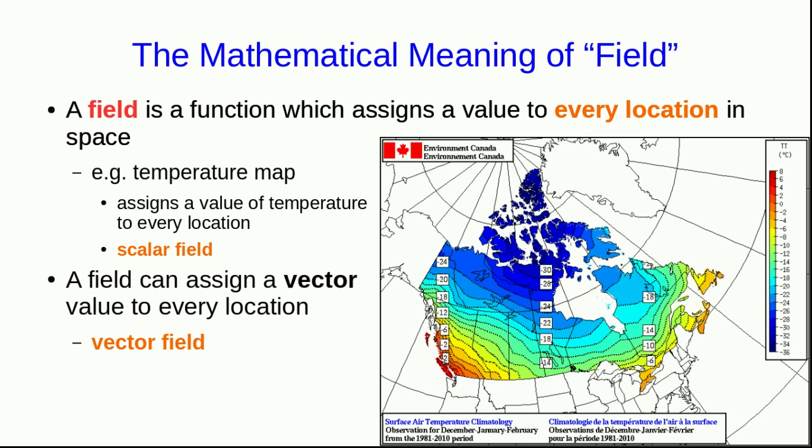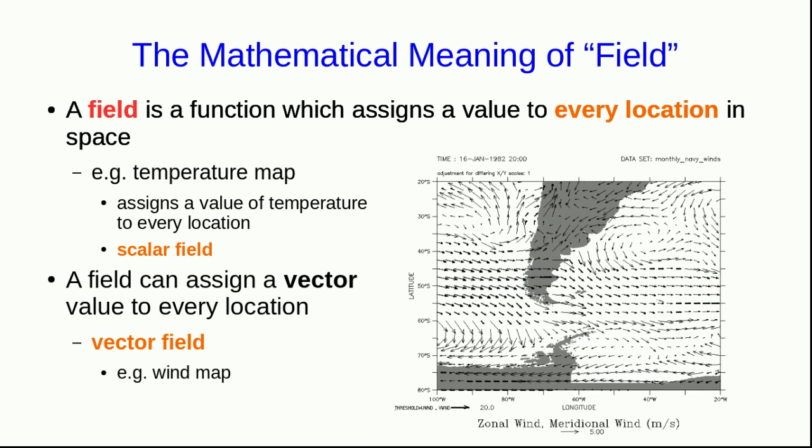However, what we'll be more interested in are vector fields, where every location has a vector assigned to it. Again, that may seem a little abstract, but again, you've probably seen things like it. For example, a wind map that shows the direction and speed of the wind at all locations is an example of a vector field. Notice you can't actually draw a vector at every point on the map. If you did, the whole map would just be black, and that wouldn't be very useful. So you have to draw a representative set of vectors.